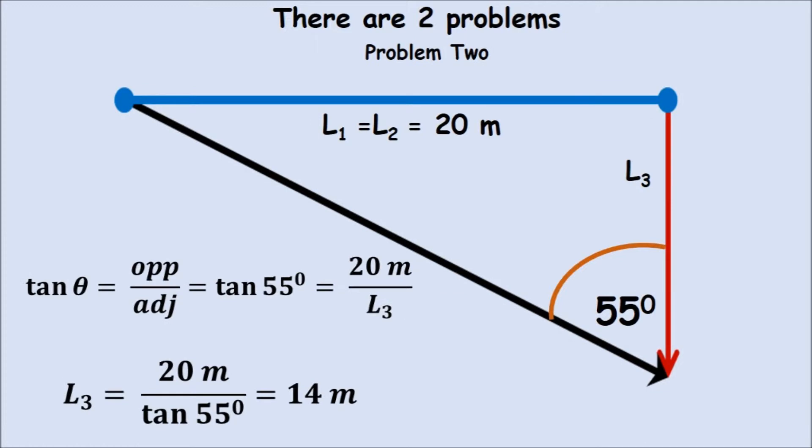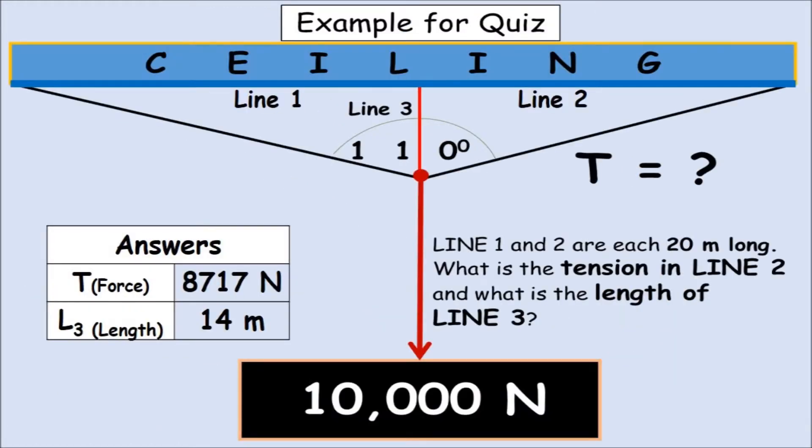Now, let's find the length of line 3. We see that the entire length across the ceiling is 40 meters. Each length, L1 and L2, would both equal 20 meters. And we plug in, and we find the length of L3 to be 14 meters. That's the sag. The question is, what happens to that sag? What happens to the tension when that sag becomes less? That's something you should research. What happens to the tension as that sag becomes less and less, or greater and greater?